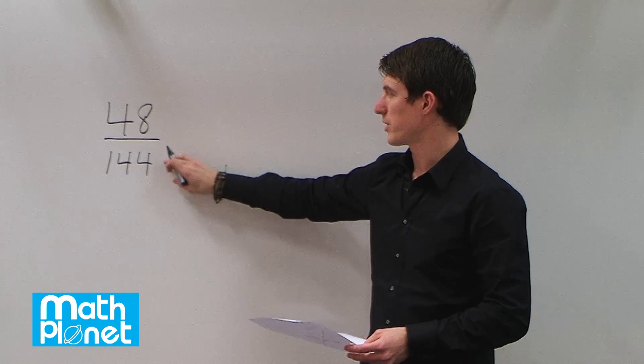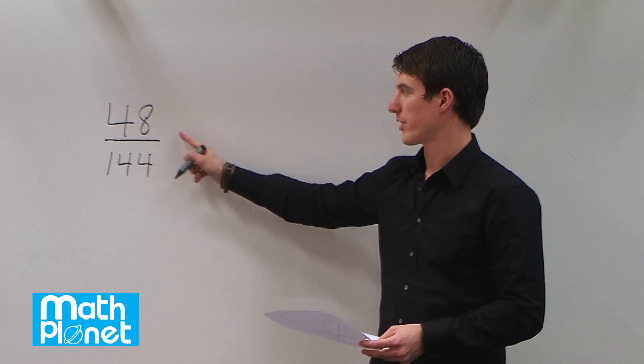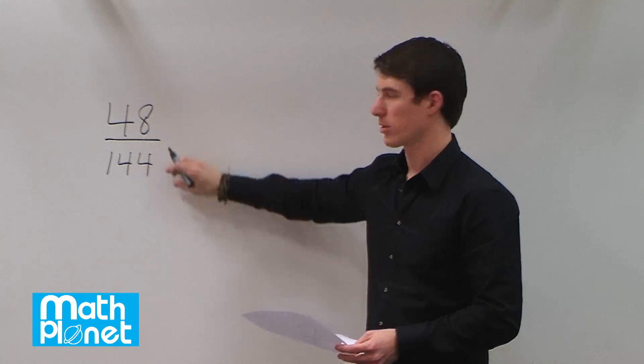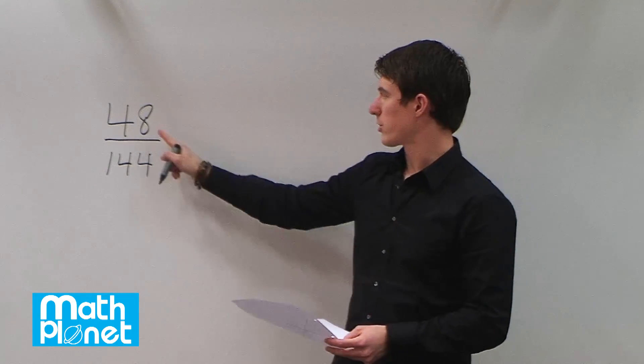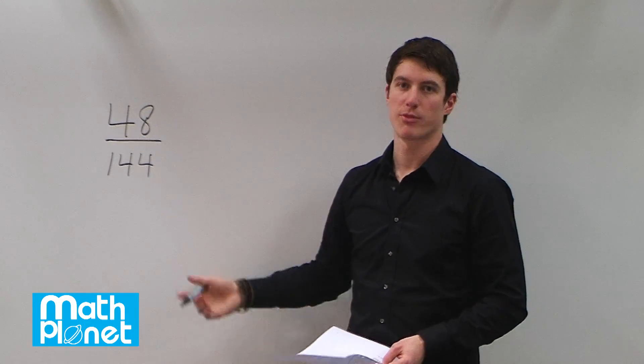You start by reducing them using common factors. You can pick any numbers you want, or if you're starting to get brave, you can guess larger numbers and divide by those. Since they're both even, we can automatically see that we can divide by 2, for example.